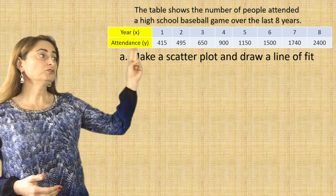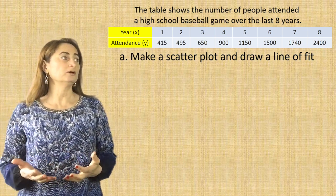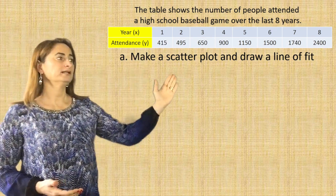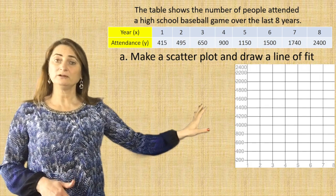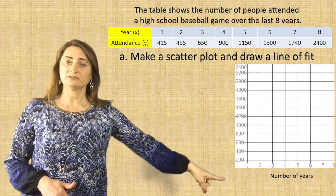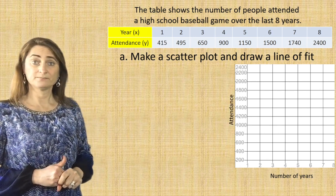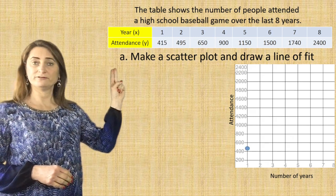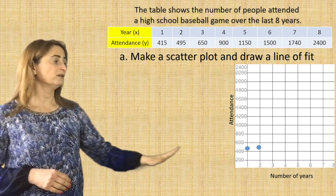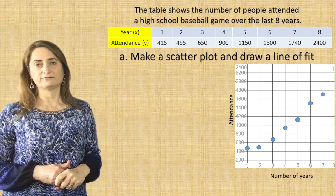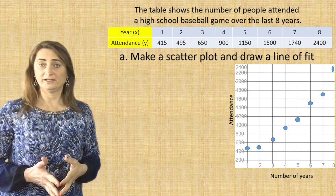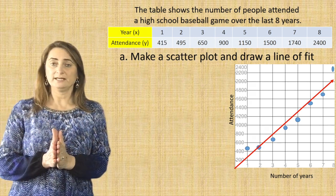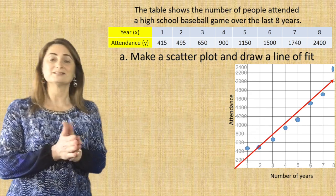Here's an example. The table shows the number of people who attended a high school baseball game over the last eight years. Make a scatterplot and draw a line of fit. First, you need a graph where x represents the number of years and y represents the number of attendees. Take the coordinate pairs from the table — where x is 1, y is 415; x is 2, y is 495 — and so forth, and plot them on the graph. Now draw the line of fit with some dots on the line, some above, and some below the line.